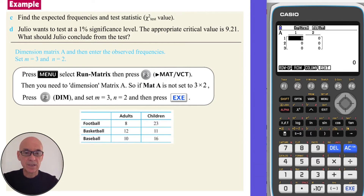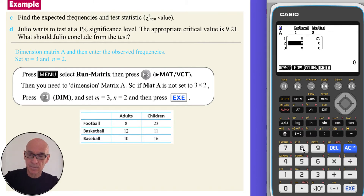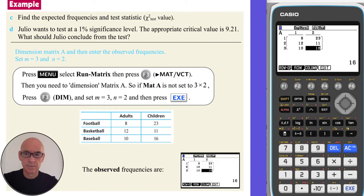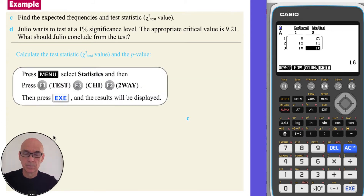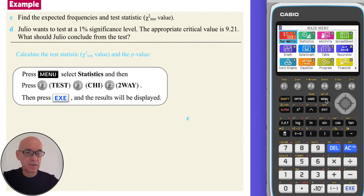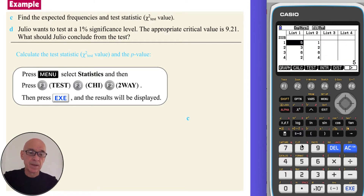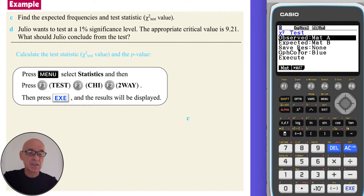Now we can enter the observed frequencies: 8, 23, 12, 11, 10, and 16, as shown to the right. Having entered the observed frequencies, we now need to calculate the test statistic and its p-value. On the calculator, press menu, option two for the statistics menu, followed by F3 to perform a test, followed by F3 again for a chi-squared test, then F2 to perform a two-way test. The observed frequencies are in matrix A and the expected frequencies will go into matrix B. Press execute and the results will be displayed.